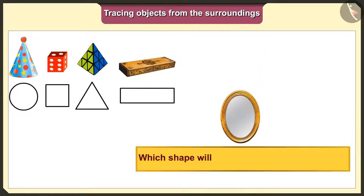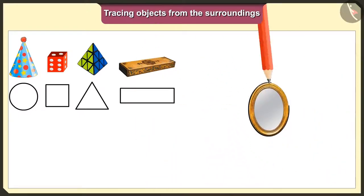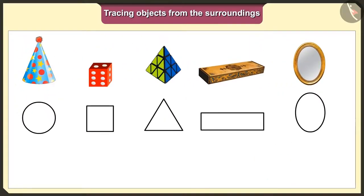Now, tell me which shape would we get when we trace this mirror. The base of this mirror is oval. So, we will get oval shape when we put it on paper and trace it.